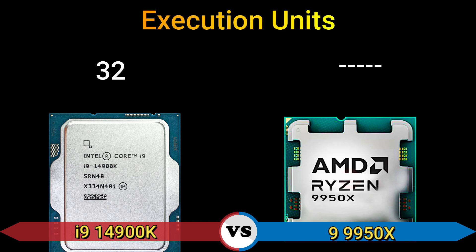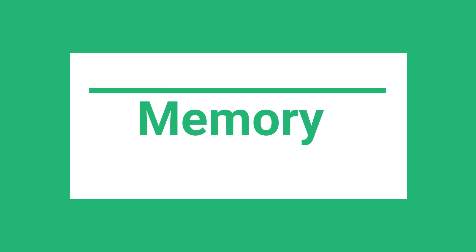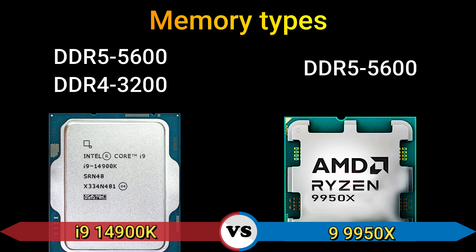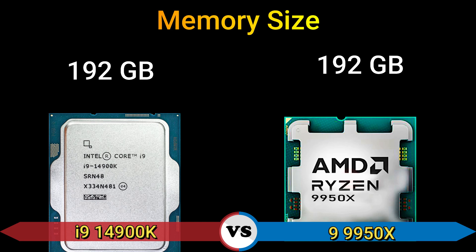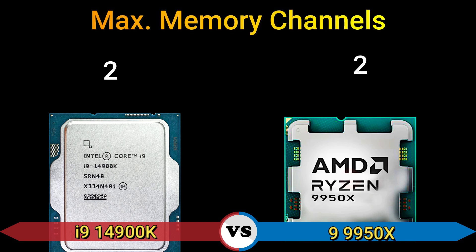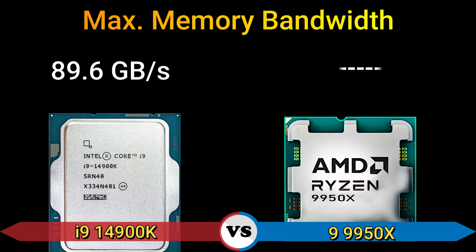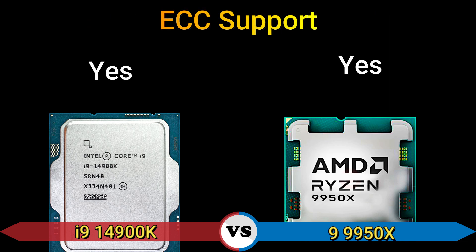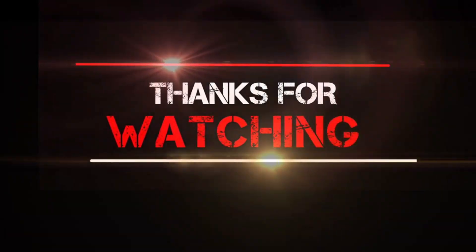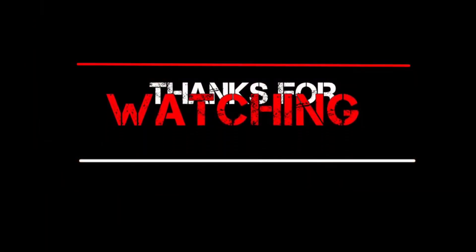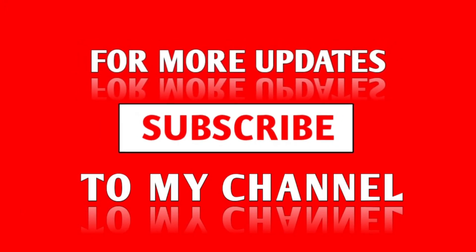Part 4 — Memory. Memory types: DDR5-5600, DDR4-3200, DDR5-5600. Max memory size: 192 GB. Memory channels: 2. Max memory bandwidth: 89.6 GB/s and 6.6 GB/s. ECC support: yes. Thanks for watching — for more updates, subscribe to my channel.